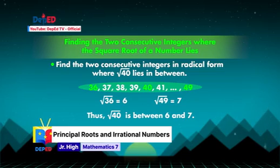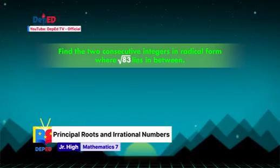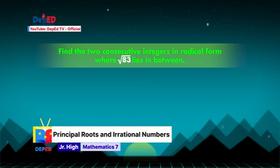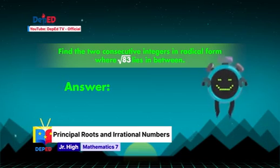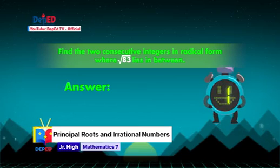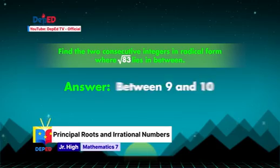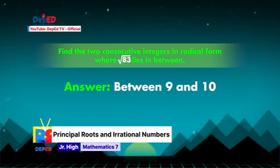It's your time to answer this: find the two consecutive integers where square root of 83 lies in between. If your answer is between 9 and 10, you got it right!